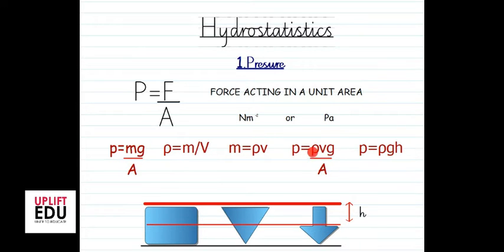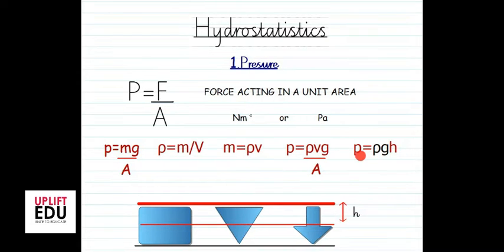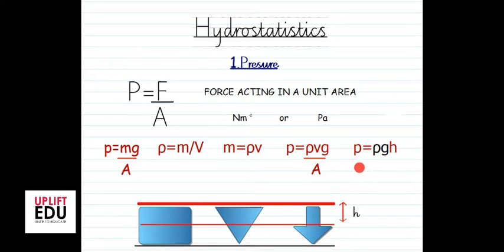Since volume equals surface area times height, dividing volume by surface area gives the height. This simplifies the equation to P = ρgh. Since the density of a liquid and gravitational acceleration are both constants, it is clear that the pressure of a liquid is directly proportional to its height from the reference point.